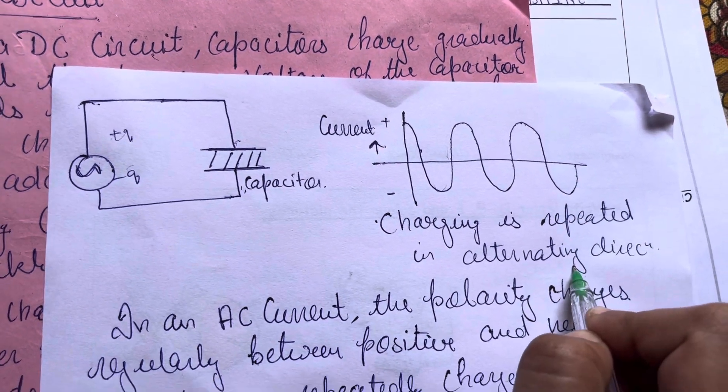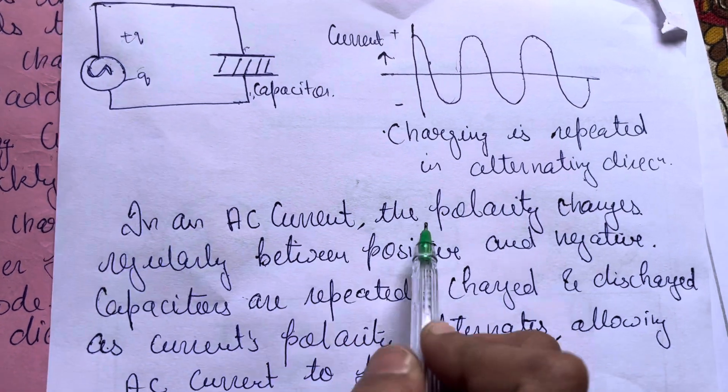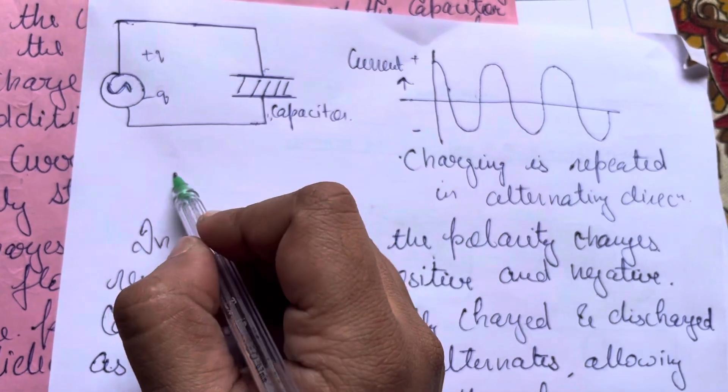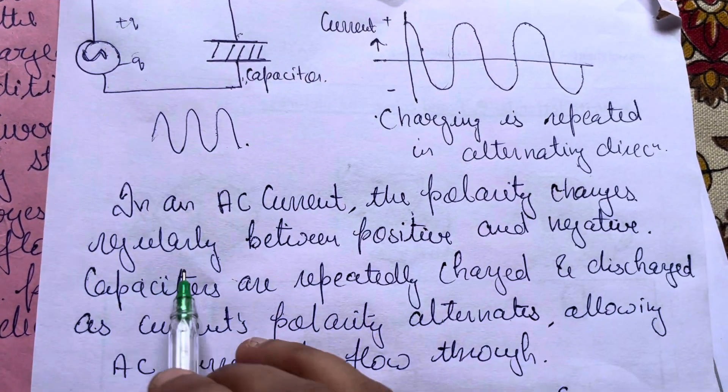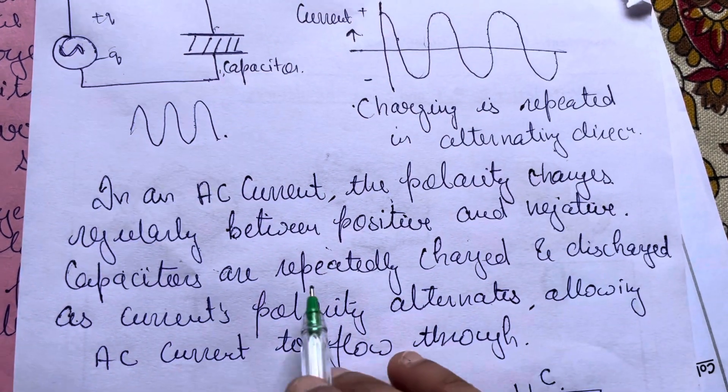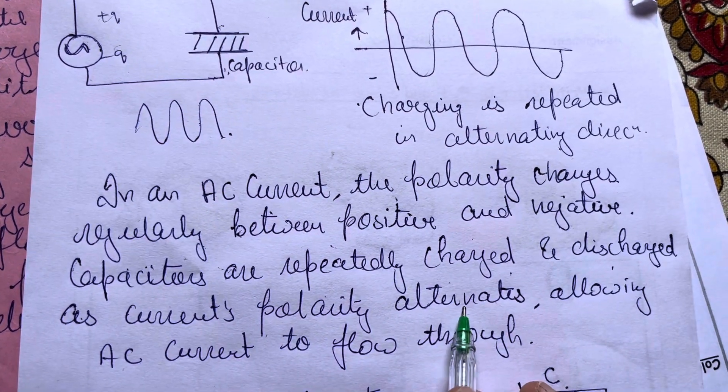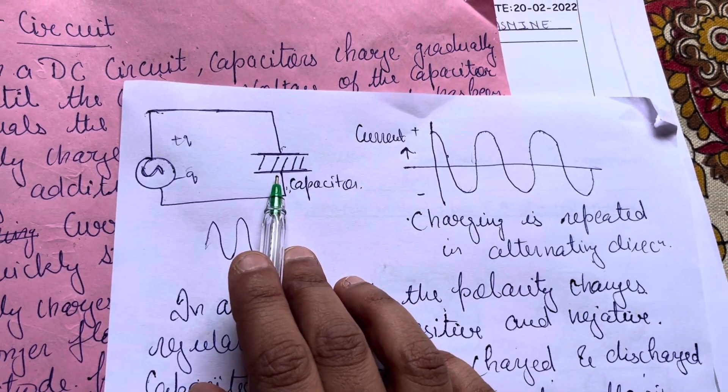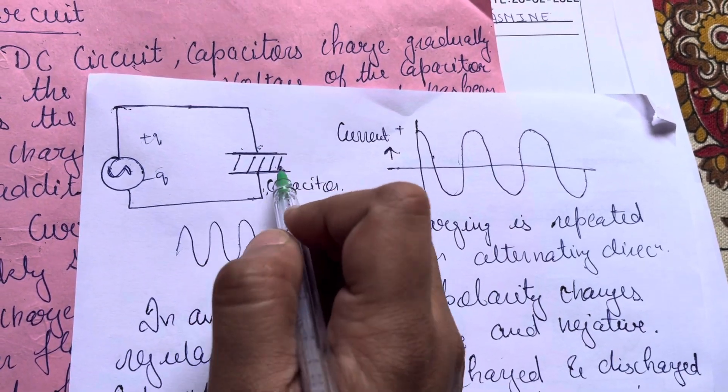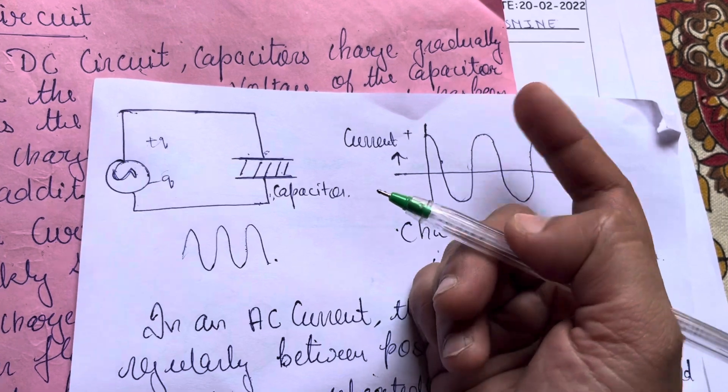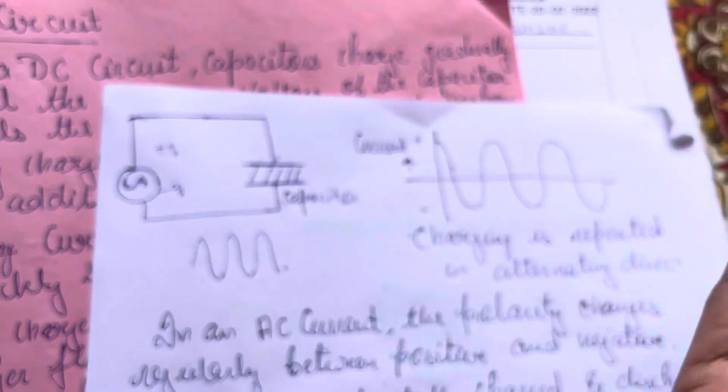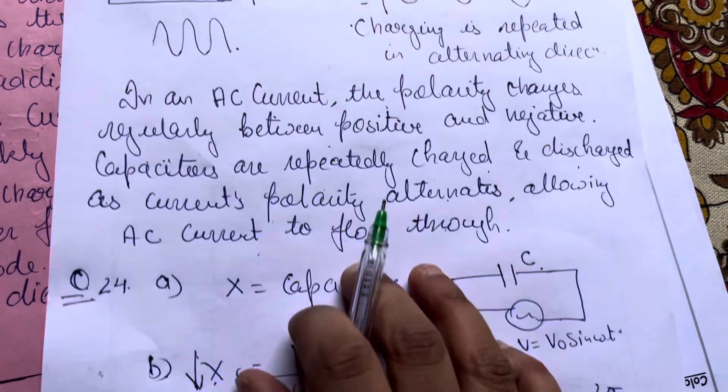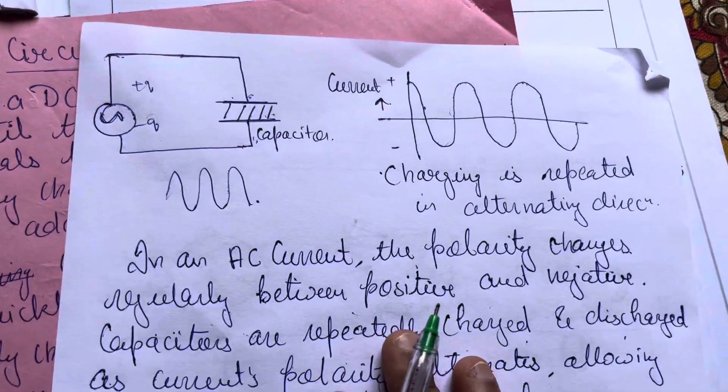In an AC circuit, the polarity changes regularly between positive and negative. The capacitor is repeatedly charged and discharged as the polarity alternates, allowing AC current to flow through it. When the alternating current passes here, it will develop an alternating magnetic field, and the magnetic field also contributes to the current. So the capacitor allows AC current to pass. This is the answer. Thanks for watching.